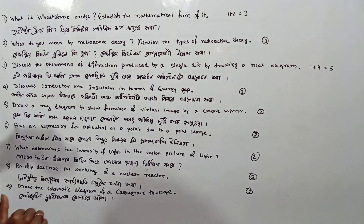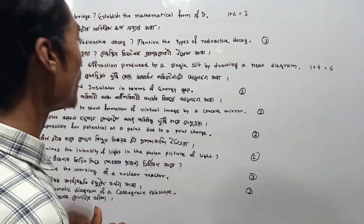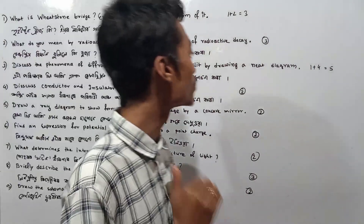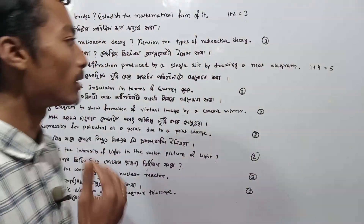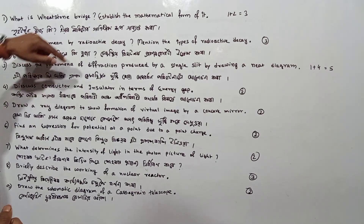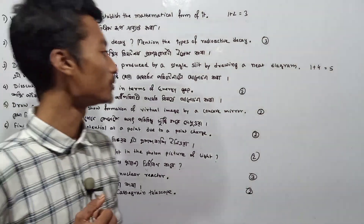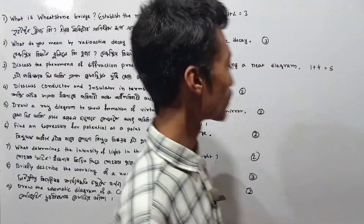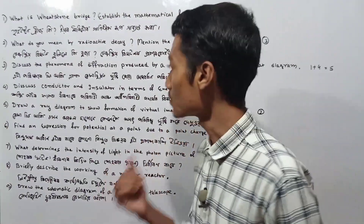Discuss the phenomena of diffraction produced by a single slit by drawing a neat diagram. This is about a past number equation — 1 plus 4. Draw the single slit diffraction diagram and explain.